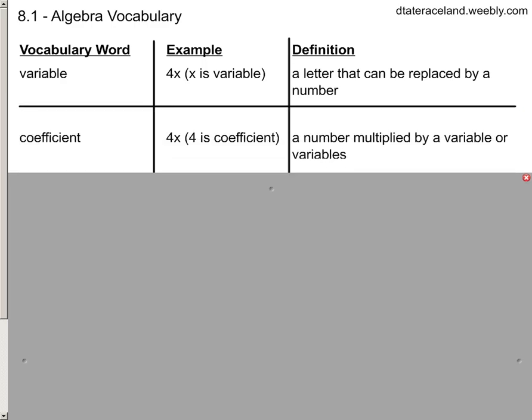Moving on, let's look at what we call that number in front of the variable. If there's a number in front of the variable, basically sitting right next to it and multiplying it, we're going to call it a coefficient. In this example, the 4 is called the coefficient, and it's just the number that multiplies any variable. If I had 6b right here, we would say 6 is our coefficient because it's multiplying that variable.